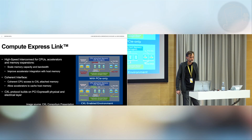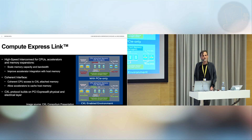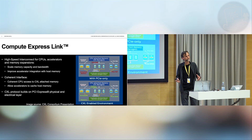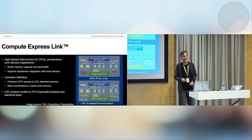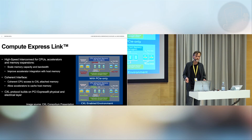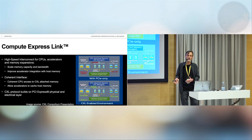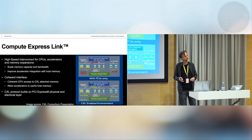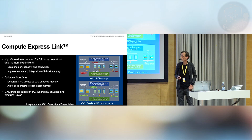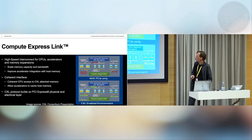So first, introduction. CXL, or Compute Express Link, is an interconnect for providing coherent access between memory from CPUs, accelerators, and memory expanders. Basically, the coherent part means the CPU can access memory on a device coherently — meaning it can cache it and so on. We also want accelerators to be able to read directly from CPU-attached memory and cache content from the CPU-attached memory.